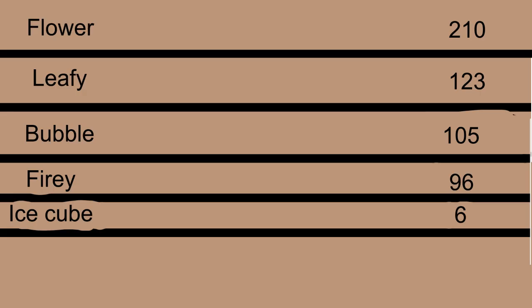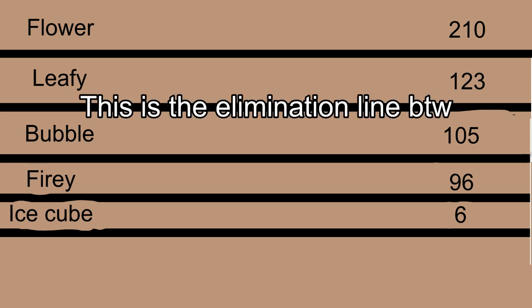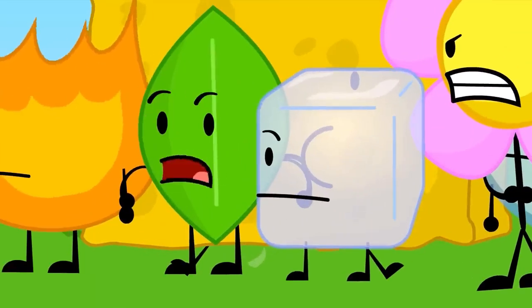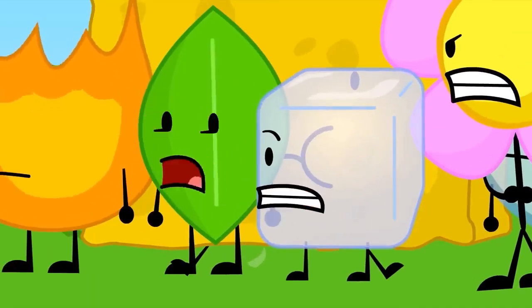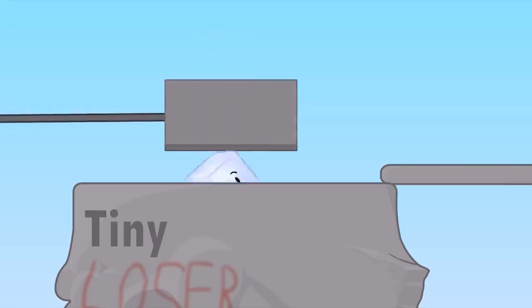Ice Cube didn't do this challenge in season 1. But she would probably tie with flower. That's why Bubble and Leafy got 25 points. And Ice Cube is still up for elimination. Again. And out of Bubble Fiery and Ice Cube, Ice Cube would be eliminated since she's the least popular out of the 3.